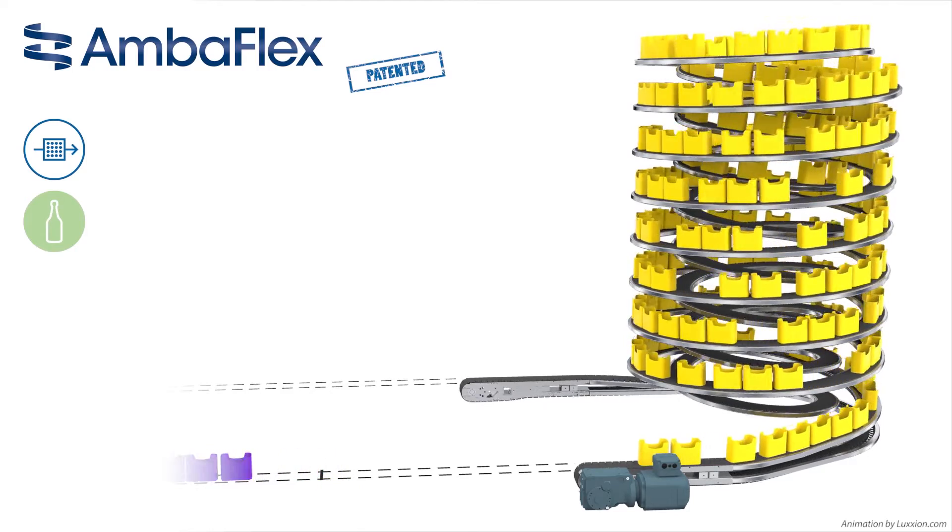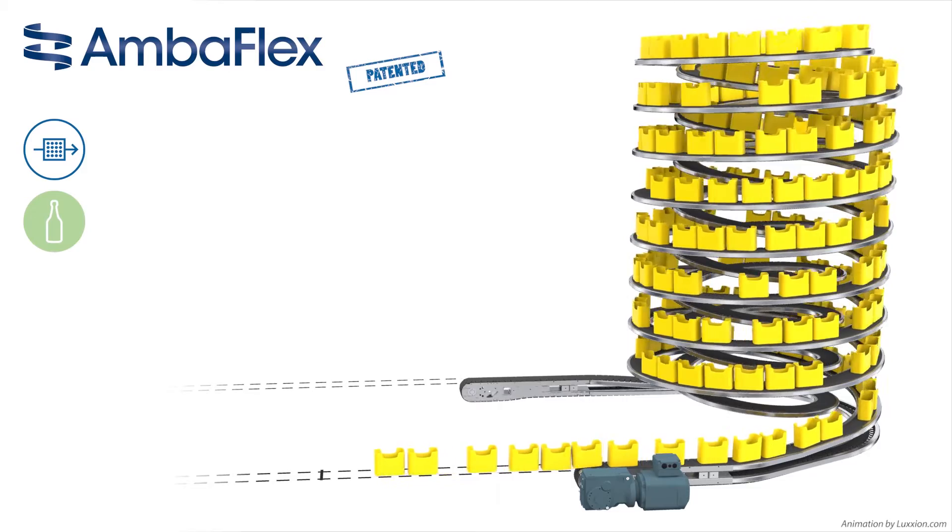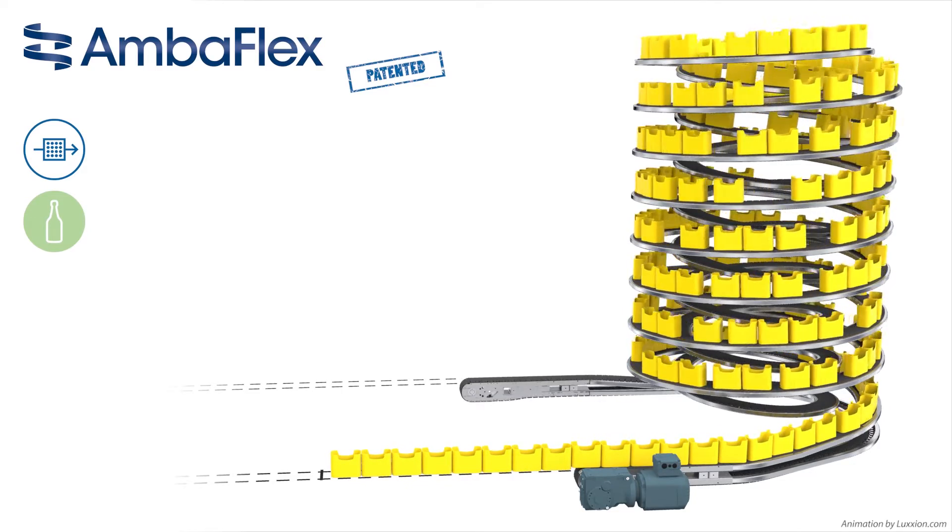When the train of purple-colored pucks has come out and is in use in the filling line, the newly entered yellow pucks are accumulated and brought into a non-spaced train, ready for the next run.